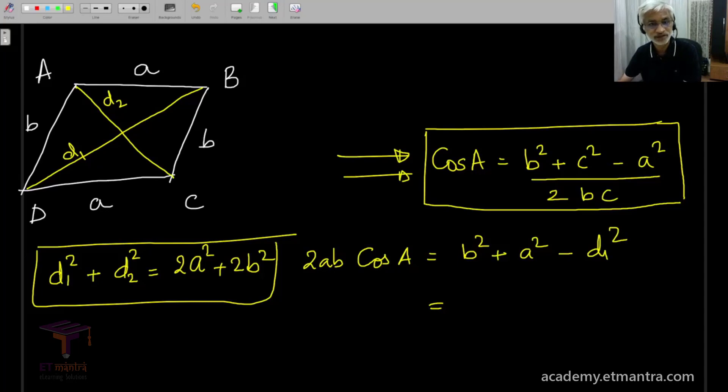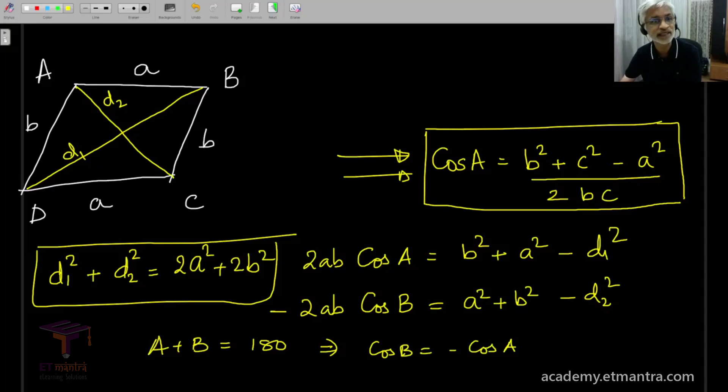And now I shall apply the cosine formula to cos B this time, and you already agree that it is equal to A² + B² - d₂² and the 2AB once again I write on this side. And the last nice thing you need to remember in a parallelogram is that the angles A and B are supplementary, and this would mean that cos B is equal to -cos A.